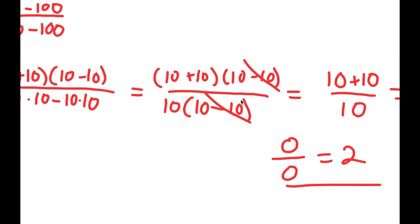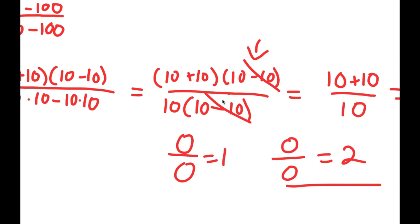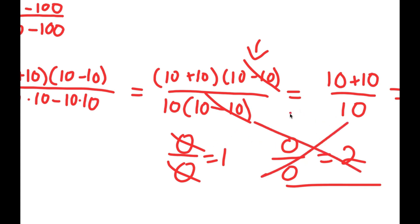Obviously 0 over 0 is not 2, so where did I go wrong? I went wrong right here — when I canceled the 10 minus 10 over 10 minus 10. What is 10 minus 10? It's 0. So that step is saying 0 divided by 0 equals 1, which I can't do. You can't cancel those out because 0 divided by 0 is not 1, so 0 divided by 0 is not equal to 2.